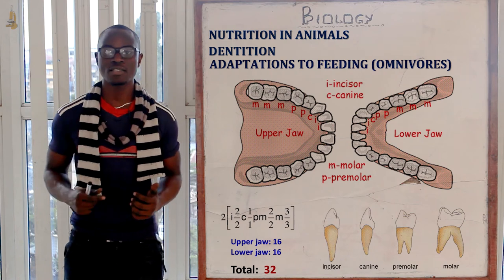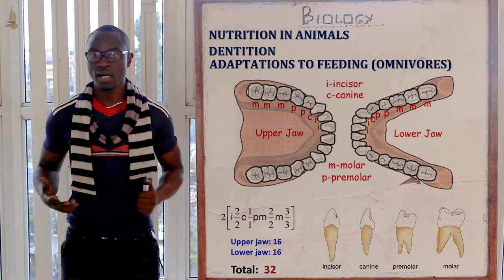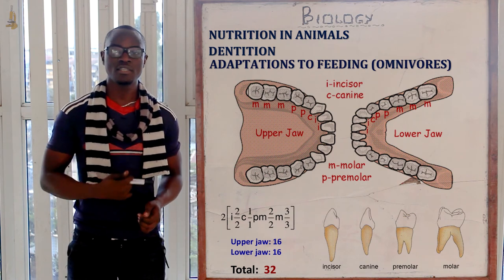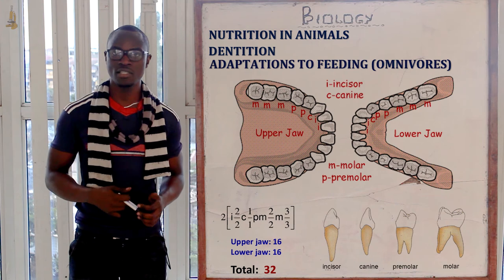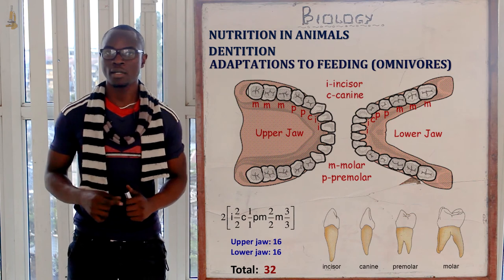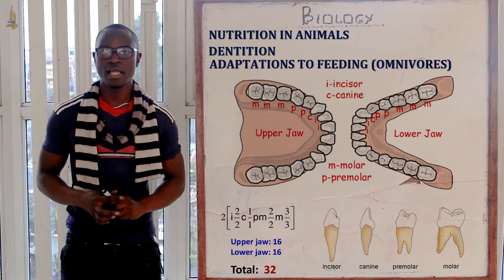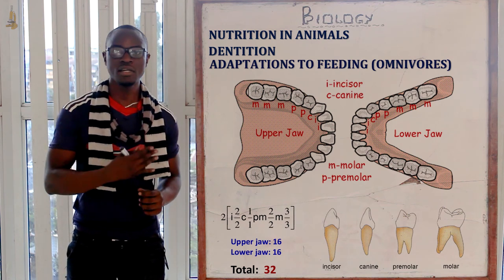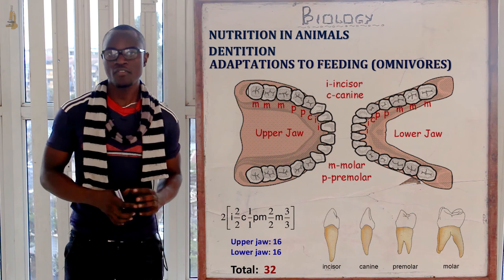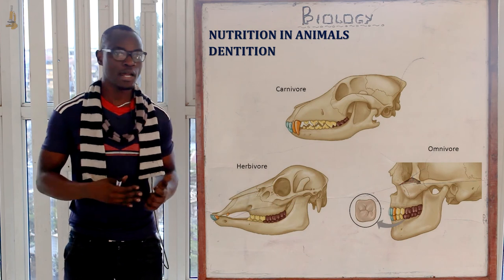The molars and premolars of omnivores have cusps to grind and crush food. As an example, human beings have: incisors 2/2, canines 1/1, premolars 2/2, and molars 3/3. When you calculate the sum of one side, you get 16, which is half. Multiplying by two gives 32, which is the total number of teeth for an adult human being.